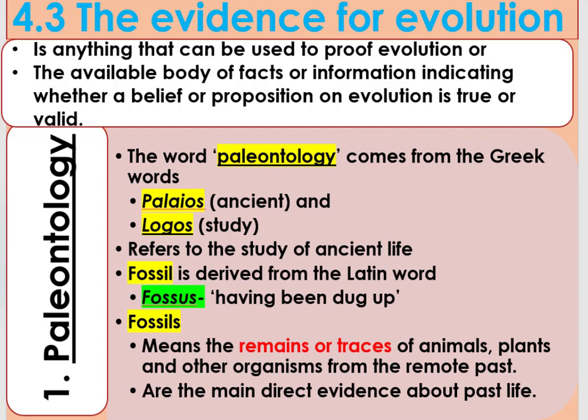Evidence for evolution is anything that can be used to prove evolution, or the available body of factors or information that indicate whether a belief or proposition on evolution is true or valid. The main sources of evidence for evolution are paleontology, comparative embryology, comparative anatomy, comparative biochemistry, and animal and plant breeding.